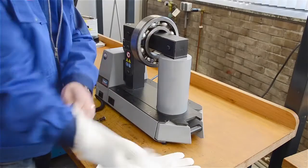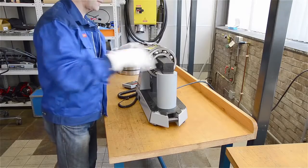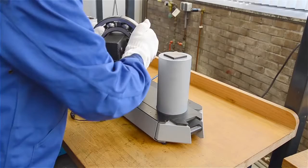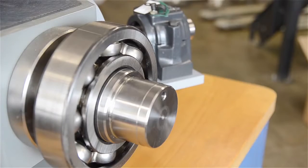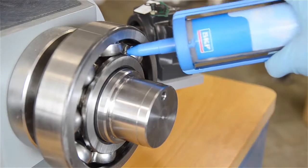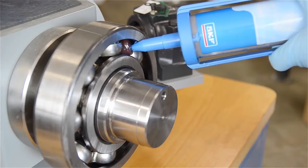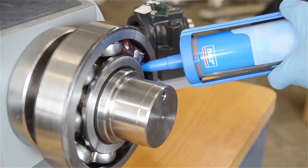Wearing SKF heat-resistant gloves, remove the bearing from the heater and place on the shaft. As the bearing cools, a strong interference fit results. Just apply lubrication and the bearing is ready to run.